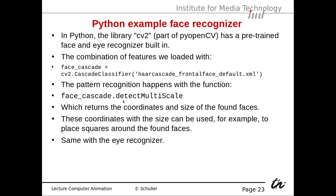Pattern recognition happens with the function faceCascade.detectMultiScale. Multi-scale means it detects faces at different sizes, since the face can have different sizes in the image depending on how close to the camera it is. It returns the coordinates and size of the found faces — basically the position in the image. These coordinates and size can be used, for instance, to place bounding boxes around the found faces.